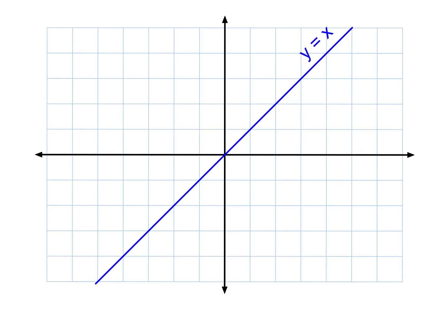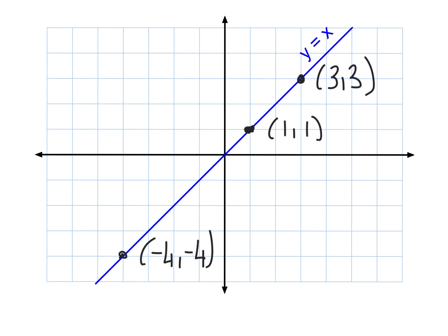Before I start, I want to show you the most basic straight line there is. This blue line has the equation y equals x. If we look closely, it's a perfectly diagonal line — it goes through each box exactly. If I plot some coordinates: that would be (1, 1), this would be (3, 3), and this one down here would be (-4, -4). You'll notice the x and y coordinates always match, so that's why this has the equation y equals x.